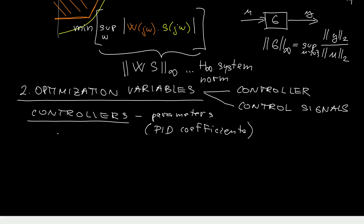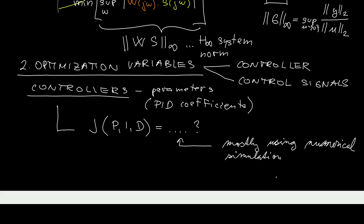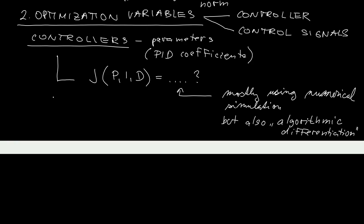There are two major issues here. First, you need to express the optimization criteria J as a function of the optimization variables. Typically, with the exception of very simplest linear systems, you cannot do it analytically—you'll have to resort to numerical simulation with unpleasant consequences like troubles evaluating first and second derivatives. There is a relatively recent contribution by algorithmic differentiation which can handle this, but we will not cover it in this course.